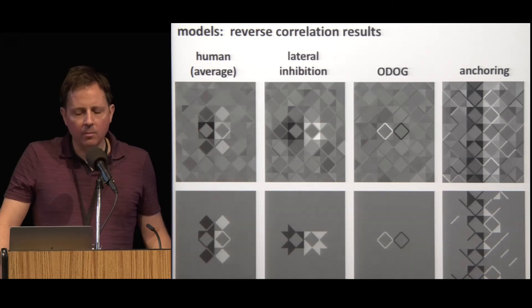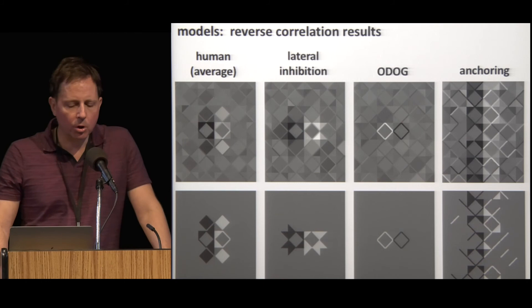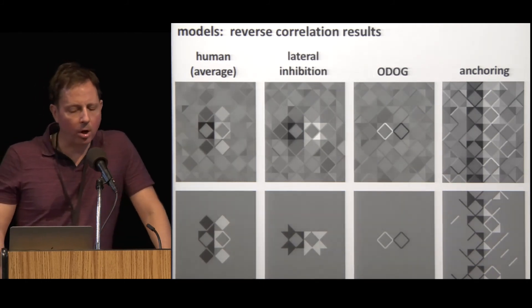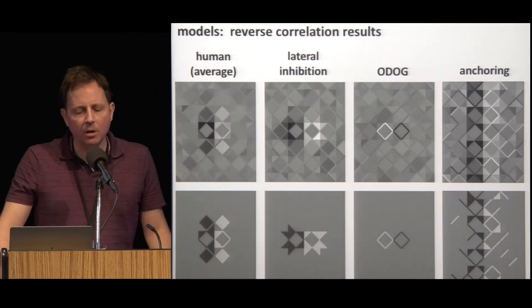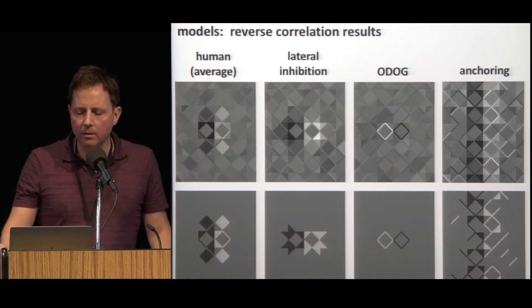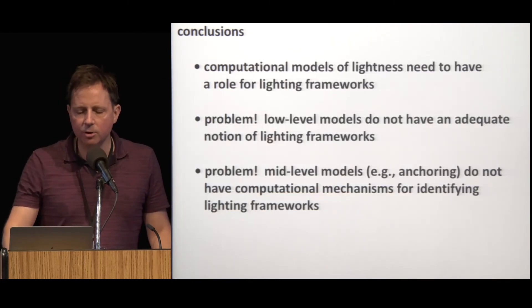The anchoring model, which did have reasonable PSEs, also shows a very different classification image from human observers. In this model, all elements in the lighting framework contribute to lightness, and the distance between two elements is unimportant. As a result, the classification image shows effects that were not local at all, and they extend all the way up and down to the vertical lighting frameworks. This is obviously a part of the anchoring model that needs to be revised in order to match human behavior.